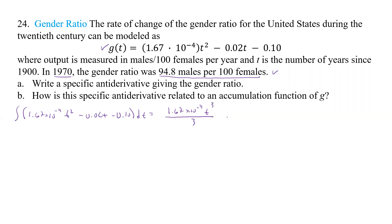Divided by 3 minus 0.02t goes up 1 squared, divide by 2, minus 0.10 goes up 1, 1 over 1, plus C.